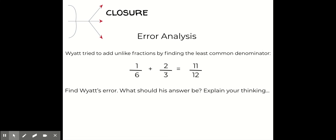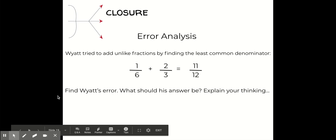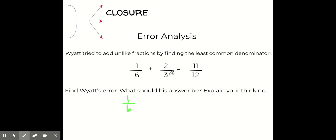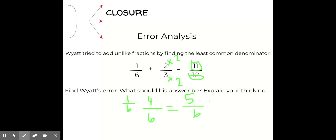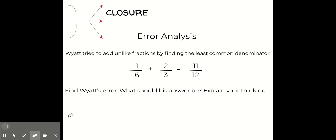I'd like you to look at this question before we close our lesson. Wyatt tried to add unlike fractions by finding the least common denominator. Find Wyatt's error and what should his answer be. Go ahead and pause to figure it out. So working it out: one sixth stays the same. I change one third to sixths by multiplying by two — three times two is six, two times two is four. So I have one sixth plus four sixths, which gives me five sixths. What Wyatt did wrong is he added the denominators — six plus six is twelve — which you're not supposed to do. The denominators should stay the same.